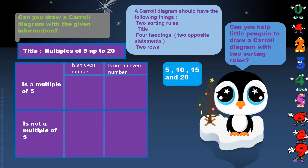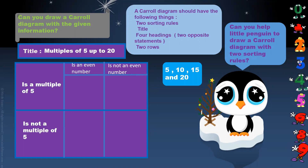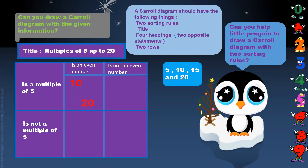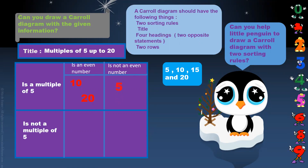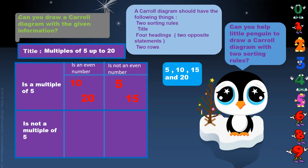The multiples of 5 up to 20 are 5, 10, 15 and 20. Of these, 10 and 20 are even numbers and also multiples of 5.